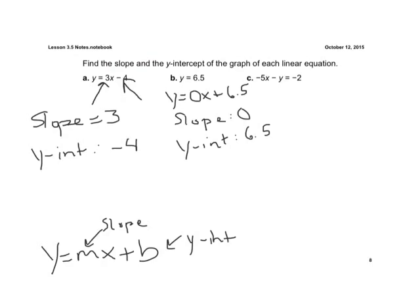And the last one here, we need to rearrange things to get it in slope intercept form. So let's first move this 5X over. Let's add it to both sides. So we're left with a negative Y equals 5X minus 2. Now it's a negative Y. That needs to be a positive Y to match that form.